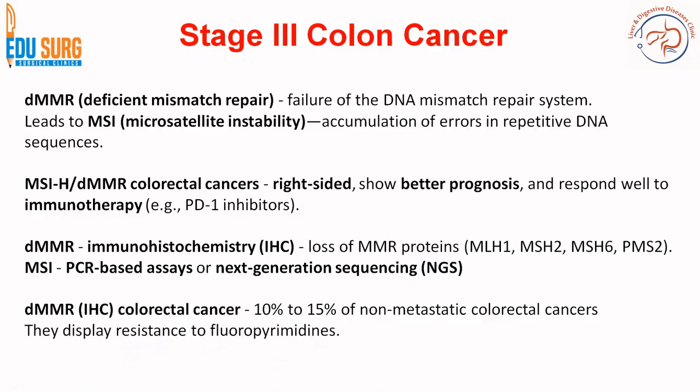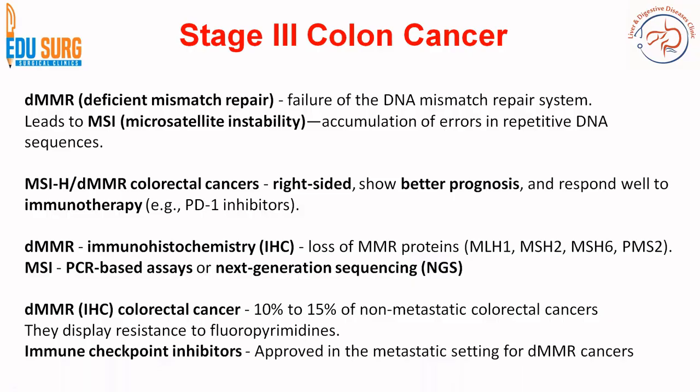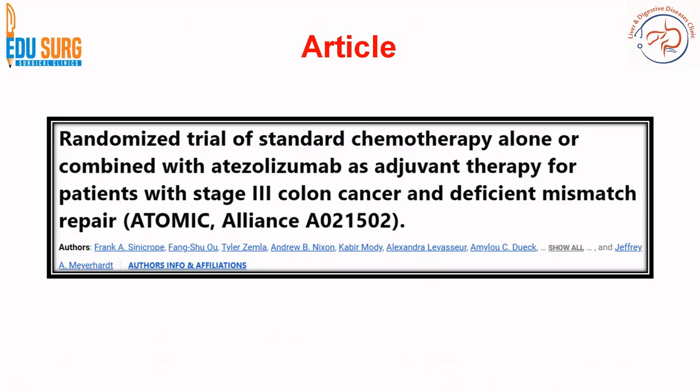DMMR/MSI-H tumors display resistance to 5-FU and fluoropyrimidines, which is why immune checkpoint inhibitors have been approved in the metastatic setting for deficient mismatch repair gene cancers. This is also why the ATOMIC trial is a randomized trial of standard chemotherapy alone or in combination with immunotherapy as adjuvant therapy for R0 resected stage 3 colon cancer with deficient mismatch repair.